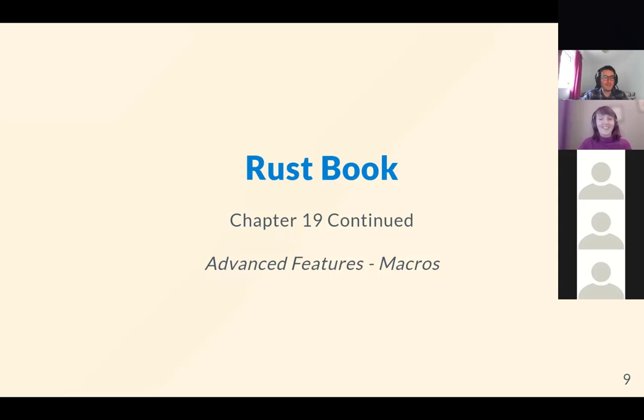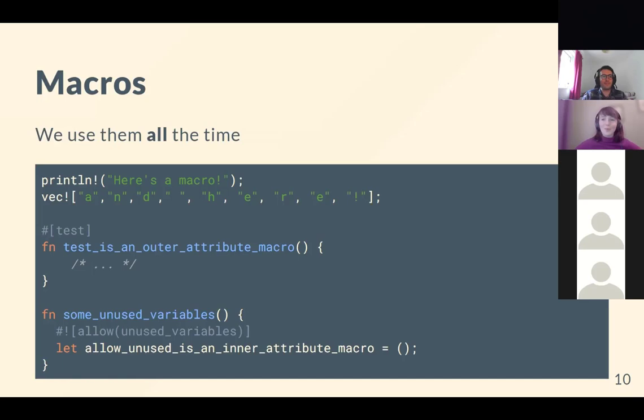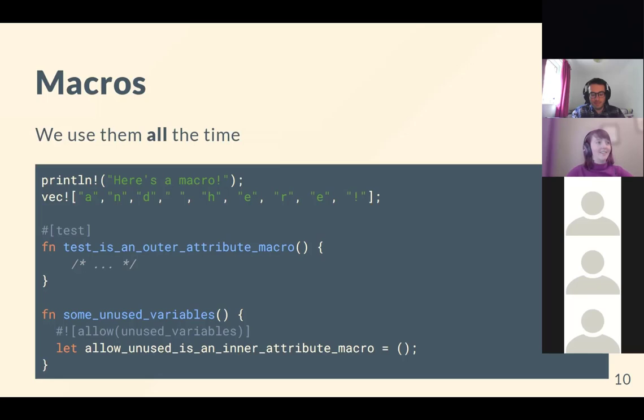This week we're covering macros. You've almost certainly already used macros in Rust — unlike in many other languages, macros are considered good and encouraged in Rust. Examples include the println macro, outer attribute macros, and inner attribute macros — those are some of the examples we're going to look at.